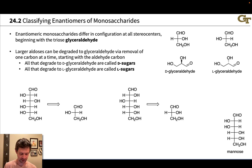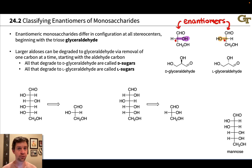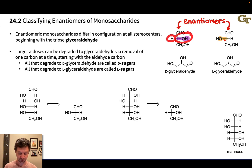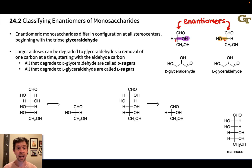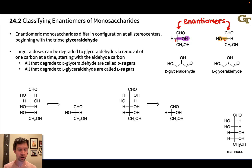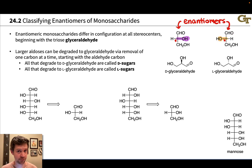Glyceraldehyde is a chiral molecule. It's got a single stereocenter, and there are two enantiomers of this chiral molecule. The two Fischer projections are drawn here, and we can see that the difference is in the orientation of the OH group and the H at that central stereogenic carbon. This is the lone stereocenter in the triose glyceraldehyde: the OH pointing to the right and the H to the left is one enantiomer, and the OH pointing to the left and the H pointing to the right is the other enantiomer.